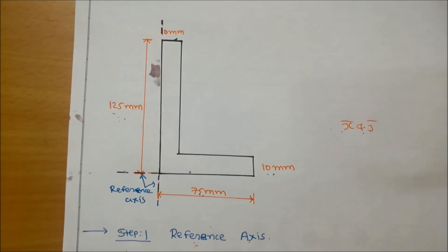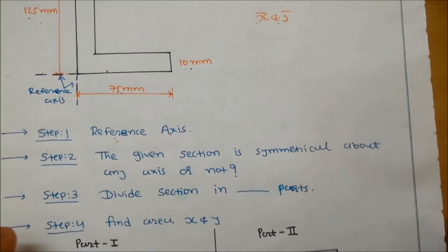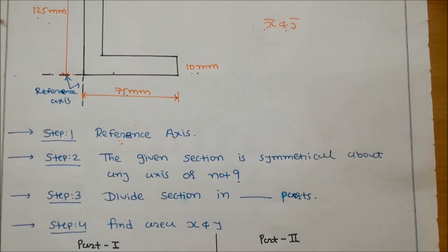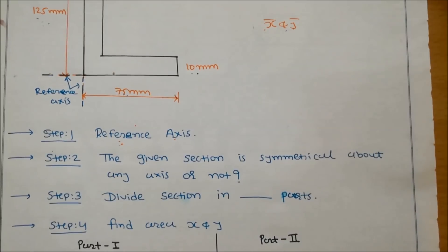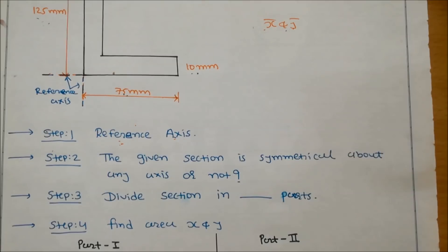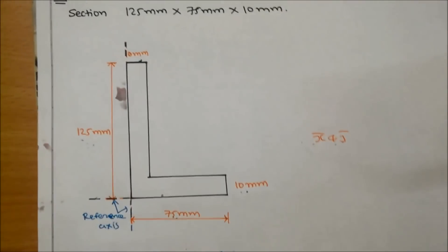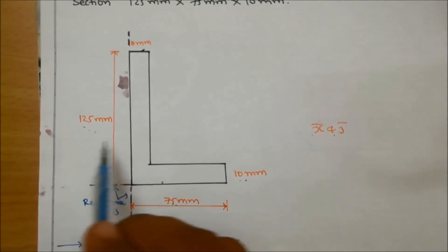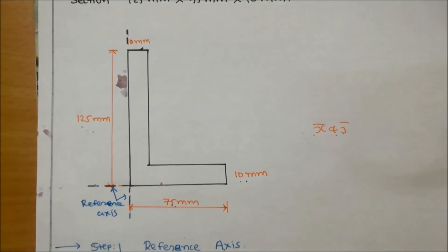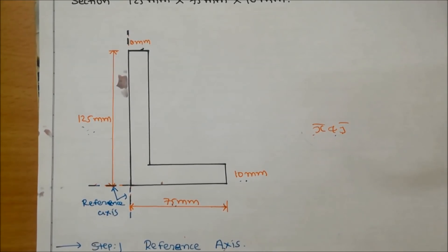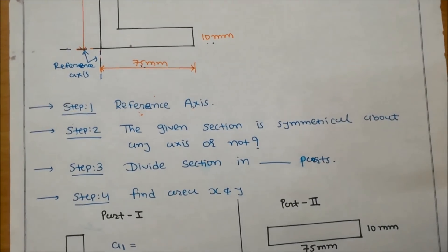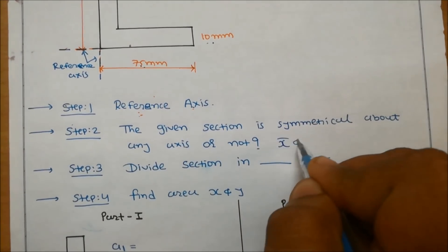In step number two, check whether the given section is symmetrical about any axis or not. A symmetrical axis is one that divides the figure into two equal parts. Here, neither the x-axis nor the y-axis divides the figure into two equal parts, so the section is not symmetrical about any axis. Therefore we find both X-bar and Y-bar.